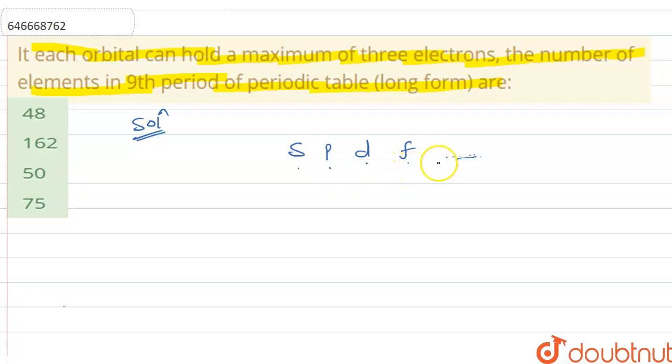And that means when we have number of elements in ninth period, the total number of orbitals...